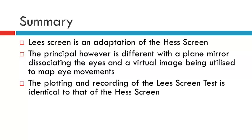In summary, the Lee screen is an adaptation of the Hess screen. However, the principle by which we assess the patient using the Lee screen is slightly different to that of the Hess screen. The difference relies basically on the way in which we dissociate the eyes and how we go about superimposing the images. With the Lee screen, there is a plain mirror dissociating the eyes and it's a virtual image being utilized to map eye movements.